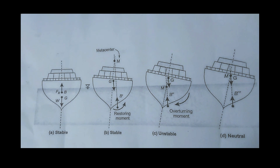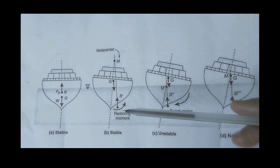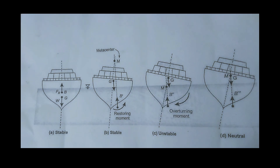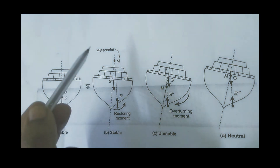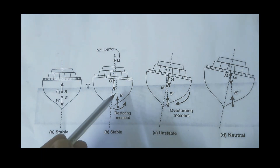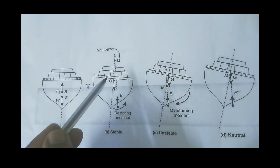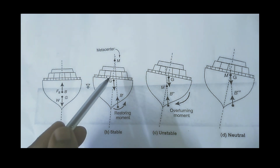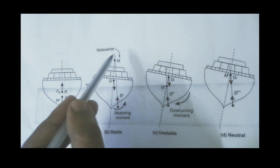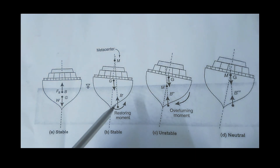The center of gravity and the center of buoyancy act at different lines when the body is tilted. The center of buoyancy shifts position while the center of gravity remains fixed. This creates a restoring moment — the forces act in opposite directions, forming a couple that brings the body back to equilibrium.